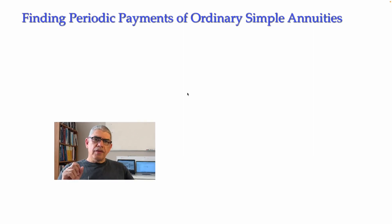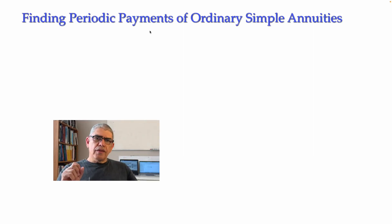Hello students! In this video I will be explaining how to compute the amount of payments when we have an ordinary simple annuity. We will notice that we have two situations. One situation will be when the problem is related to a future value — an amount of money at the end of the annuity. There will be another type of problem where the amount of money you know is at the beginning, for example a loan where you know the present value and need to compute the payment. I'm going to make an example of each of them.